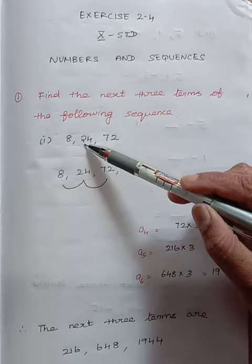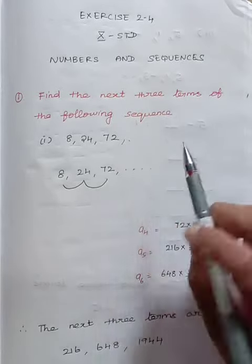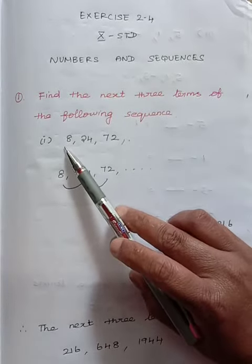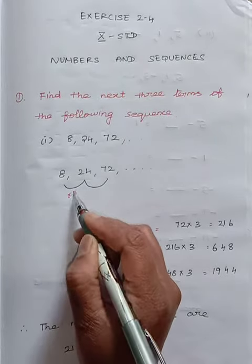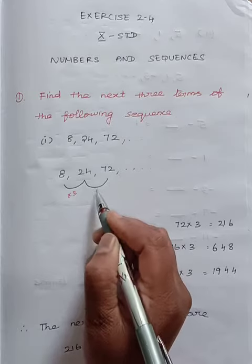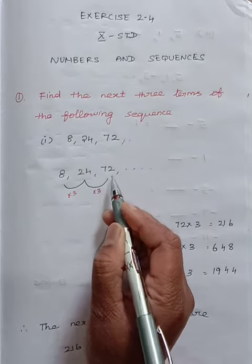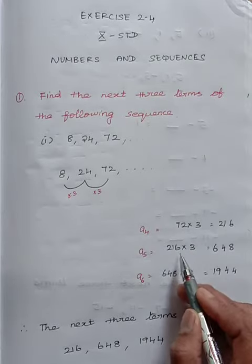8, 24, 72. Looking at the numbers, we can find out what should be done with 8 to get 24. Multiply by 3. 8 times 3 is 24. We will check whether it is suitable to the next two numbers. 24 times 3, 72. So we will proceed the same. 72 times 3, 216.